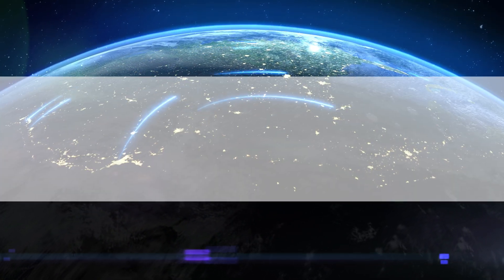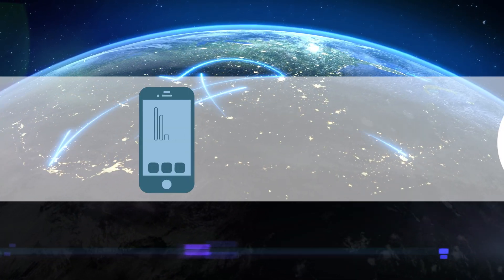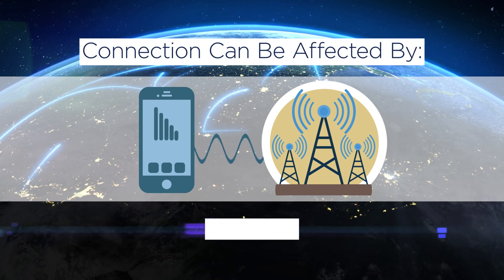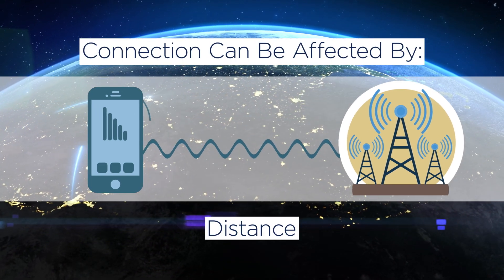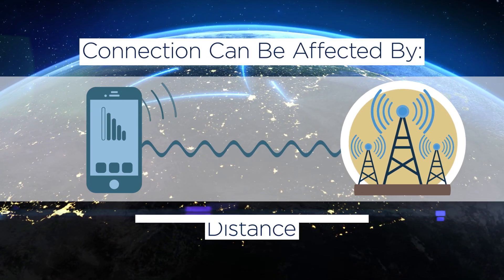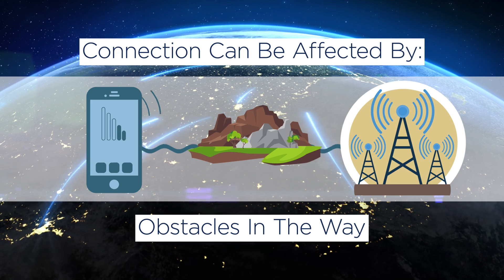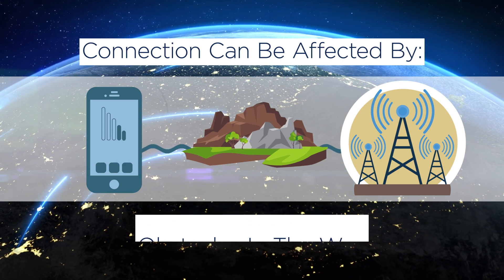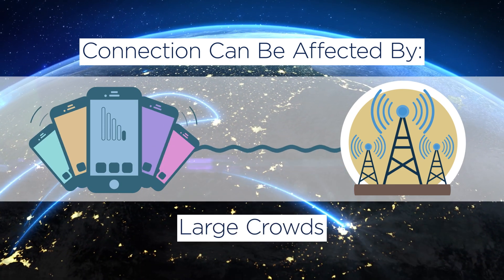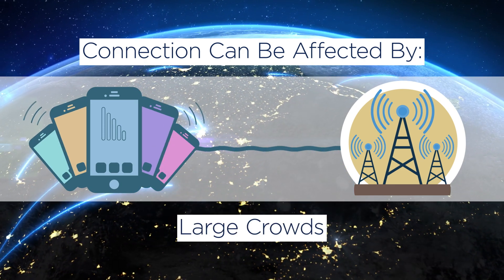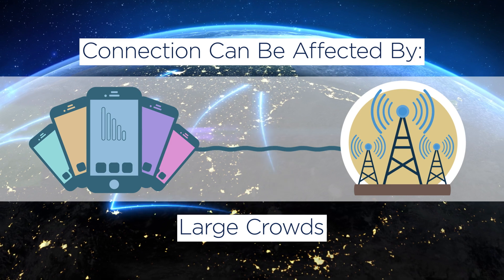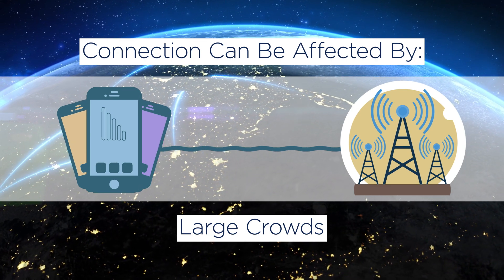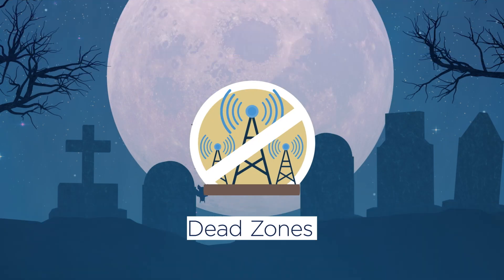The connection between a cell phone and the base station can be affected by many factors, such as distance between the two, whether any physical or topographical obstacles are in the way, and cases where large crowds are trying to connect to the same base station at the same time. Areas where you can't connect to a base station are called dead zones.